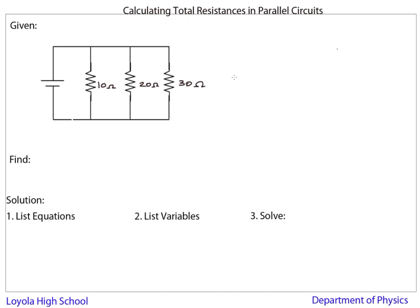And I want to find out what the total resistance is. In other words, if I were to rebuild the circuit with the battery, what one resistor could I replace these three with? So I want to find R total for parallel resistors.